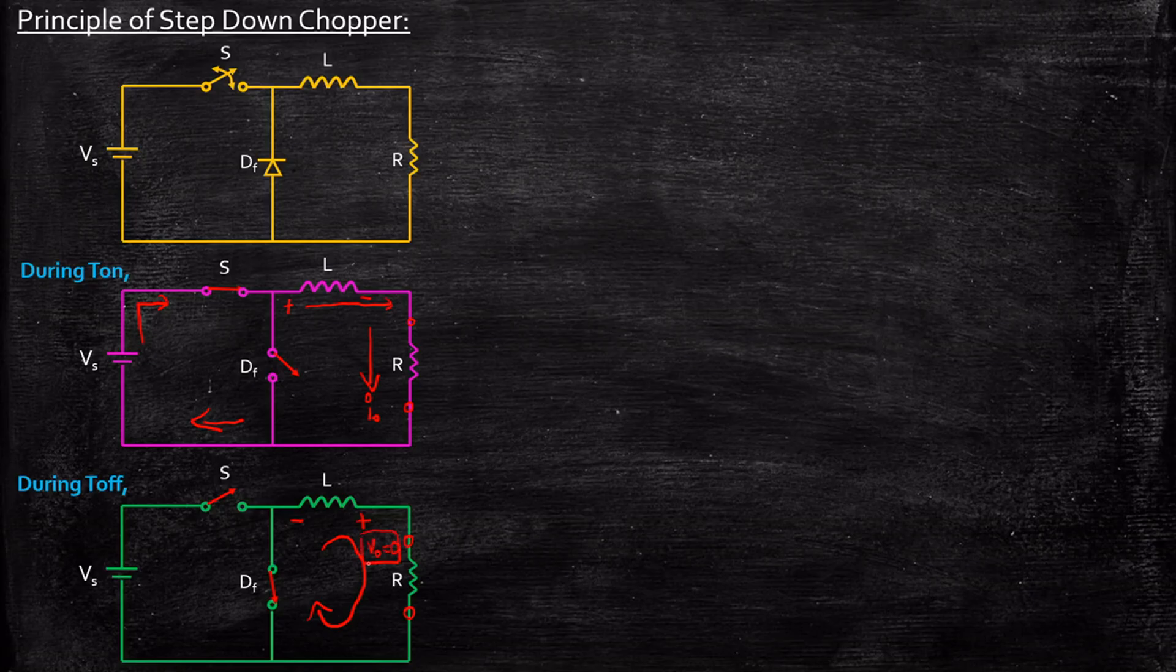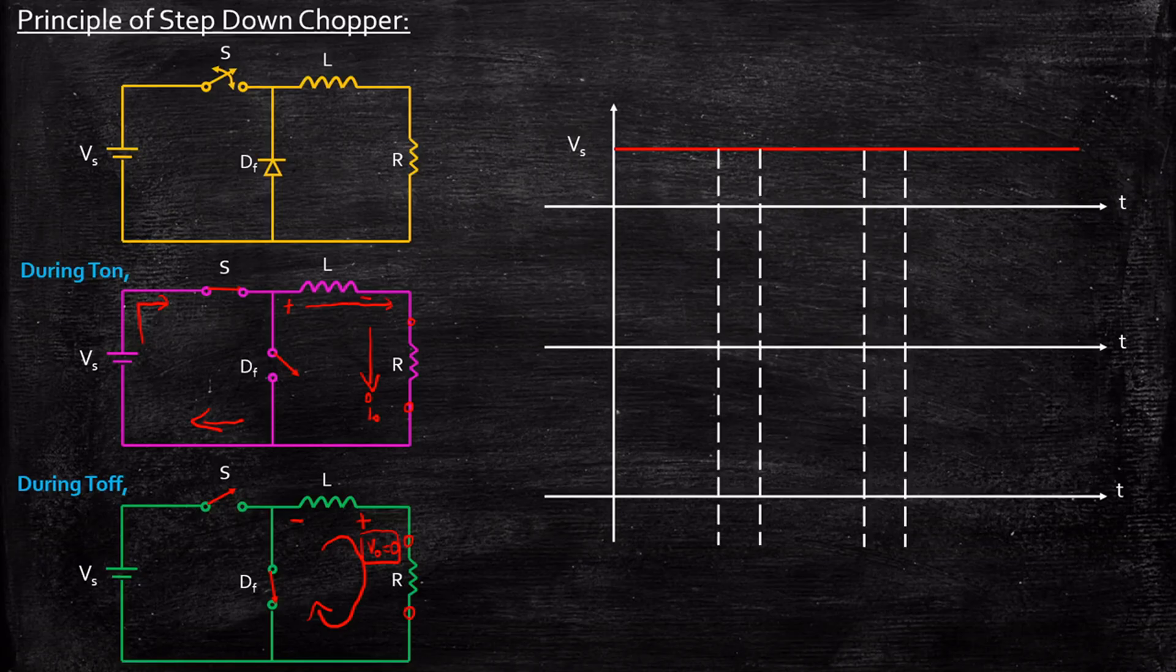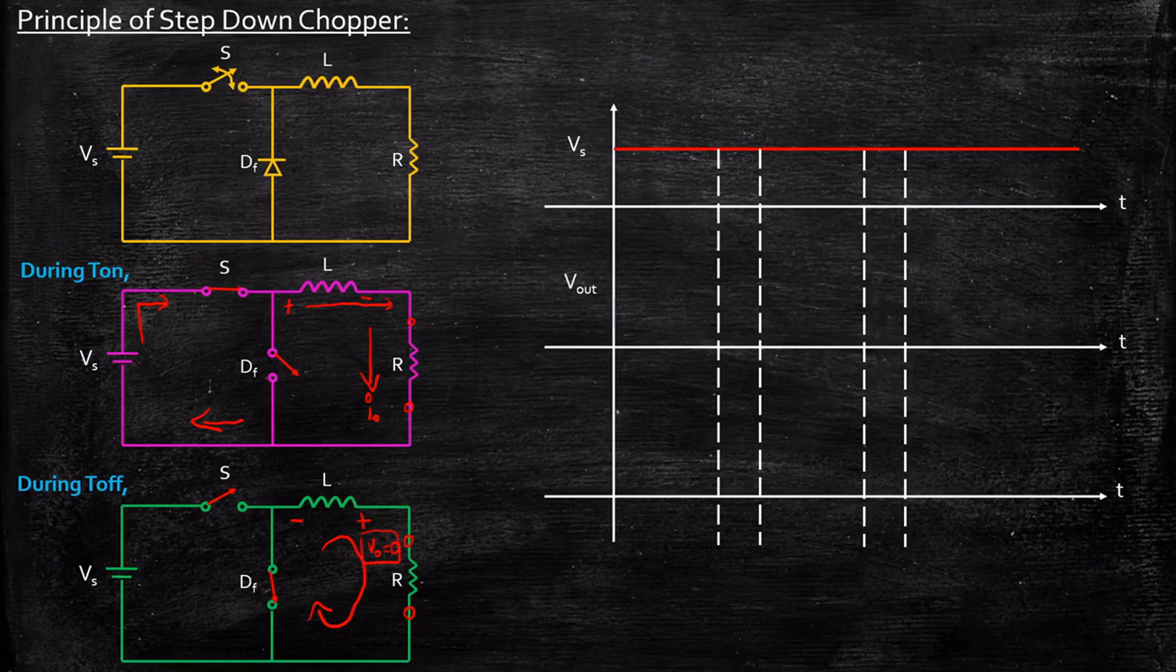Very important observation. Now, we'll take a look at the waveforms and try to correlate how the circuit operated. We are considering a DC voltage source, Vs, with a certain amount of magnitude and we have Vout. What we were doing during the turn-on cycle? This is nothing but Ton. If we consider from this point, we are going to turn on.